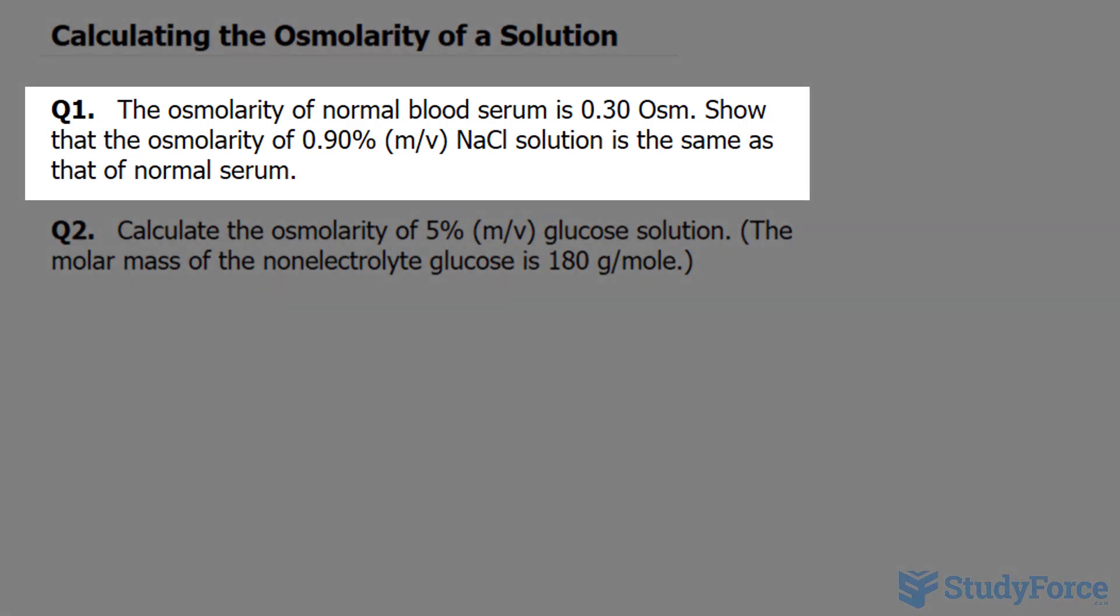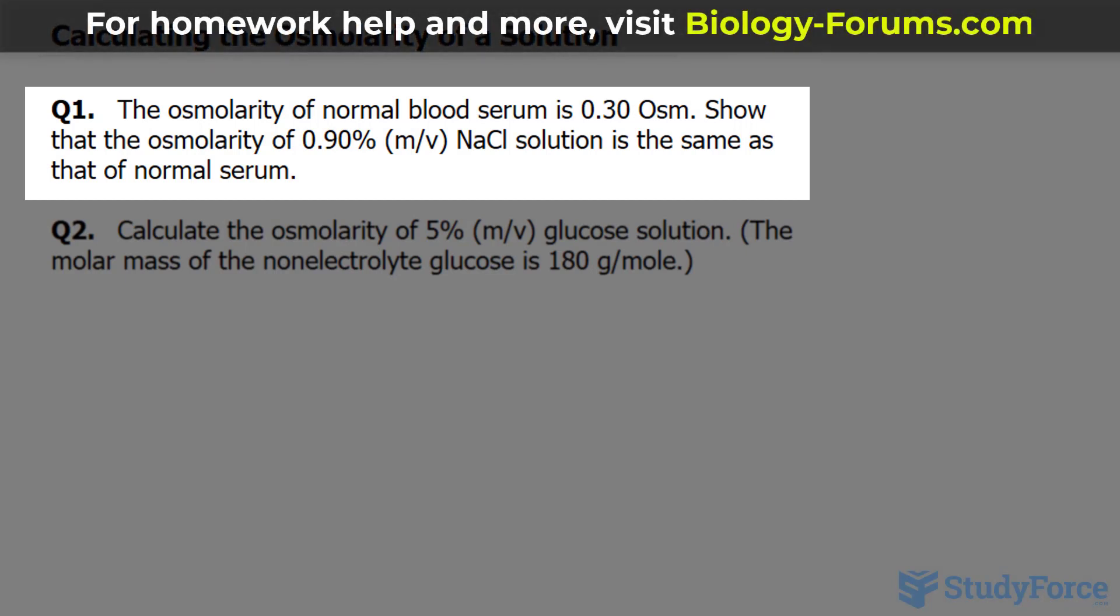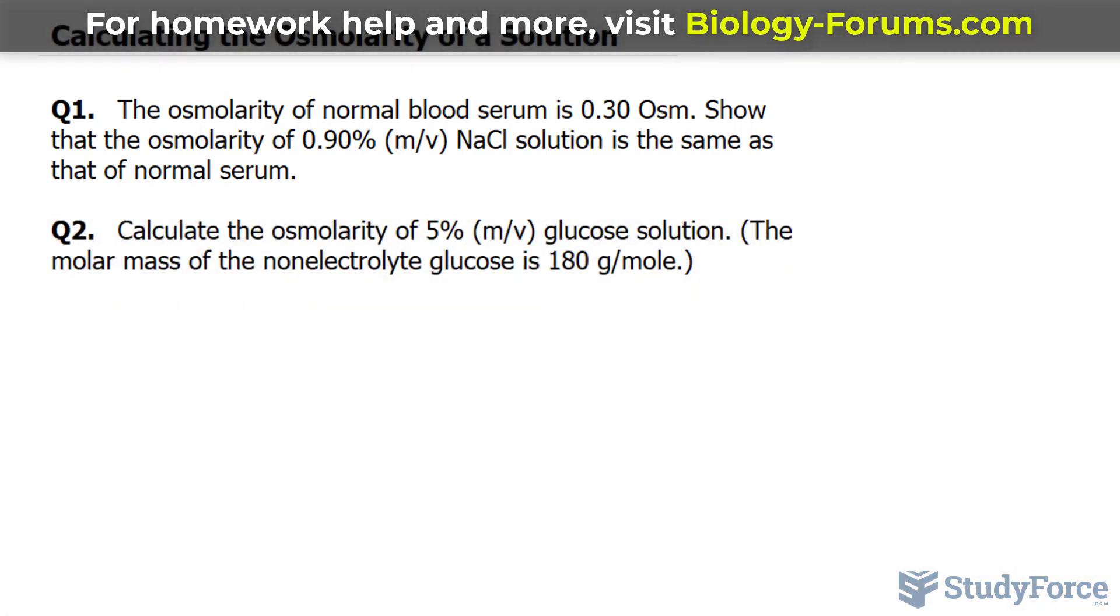Question one reads: the osmolarity of normal blood serum is 0.30 OSM, which represents osmoles per liter. Show that the osmolarity of 0.90% mass per volume sodium chloride solution is the same as that of normal serum.